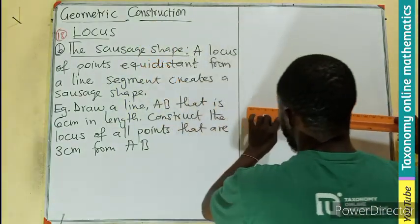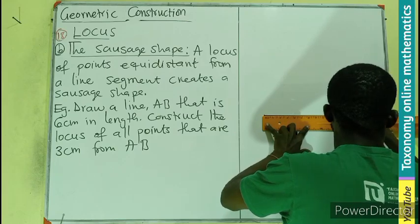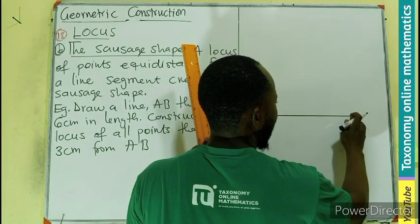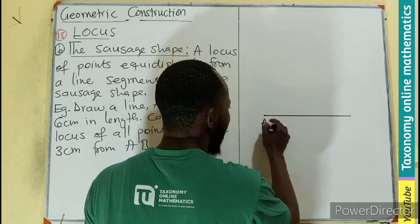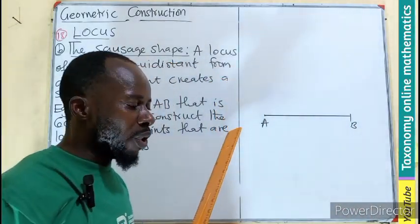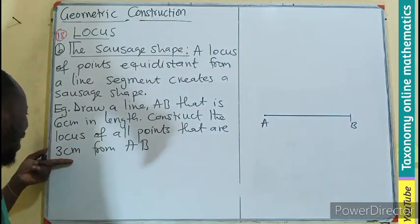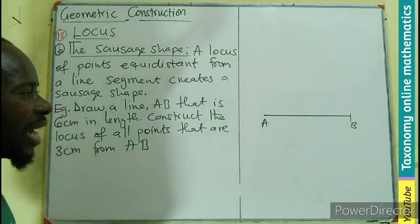I'm having the end here, so let me measure my six centimeter. So this is where my six centimeter will be. So this is A and this will be B. What we are going to do is that we are going to construct a line that is three centimeter away from it.